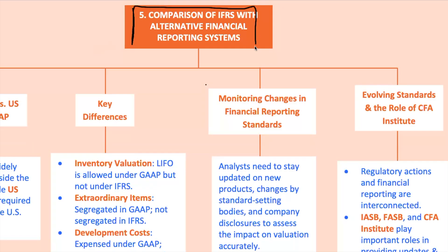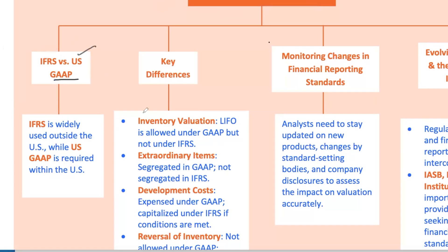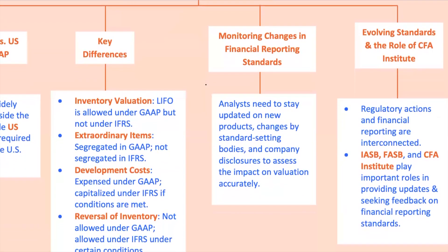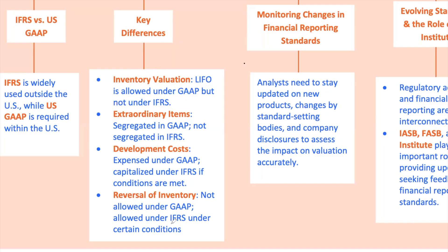Let's talk about the two major accounting standards: IFRS and US GAAP. While these standards are becoming more aligned, there are still key differences. For instance, under US GAAP, companies can use LIFO (last in, first out) for inventory valuation, but IFRS prohibits it. Also, IFRS allows the reversal of inventory write-downs under certain conditions, while US GAAP does not. If you're analyzing a company that reports under IFRS and they've reversed an inventory write-down, it could boost their reported income — under US GAAP that wouldn't be allowed, so you need to adjust your analysis accordingly. As analysts, it's crucial to stay updated on these differences because they can significantly impact your valuation and investment decisions.